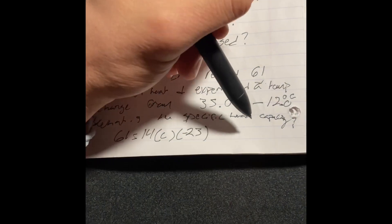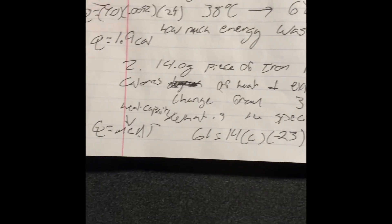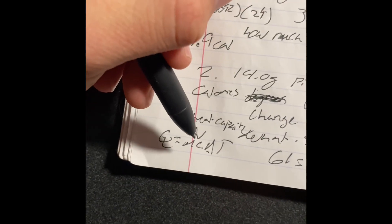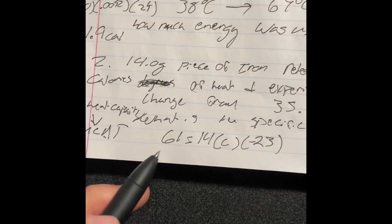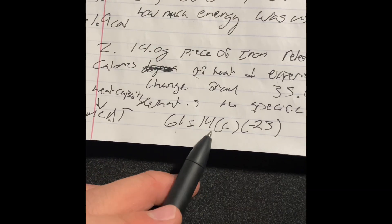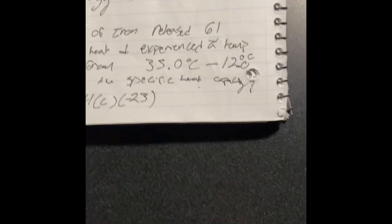It wants you to calculate the specific heat capacity, which is C. So, we end up with this being what we plug in. That's our Q. That's our mass. That's our change in temperature.